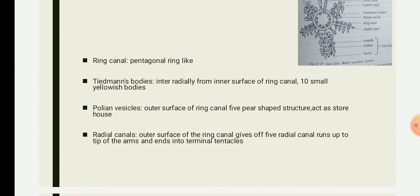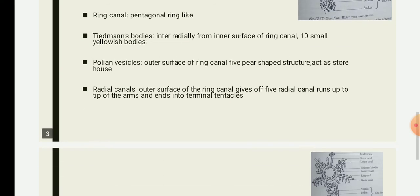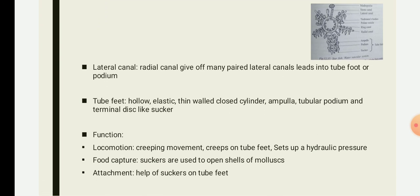The ring canal gives off five radial canals, one entering each arm. The radial canal runs up to the tip of the arm, and the end of each radial canal terminates into tentacles. From each radial canal, many paired lateral canals branch off on both sides, each leading to a tube foot, also known as a podium. Each lateral canal is provided with a valve to prevent backward flow of fluid into the radial canal.